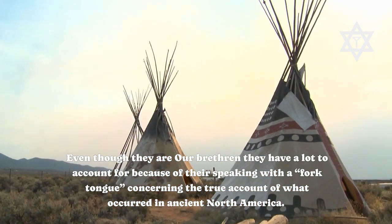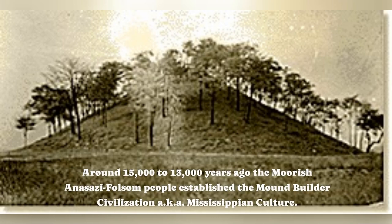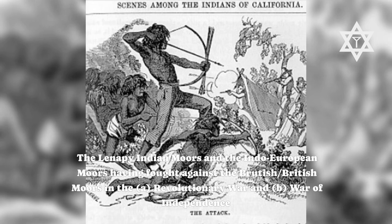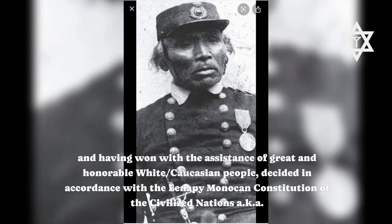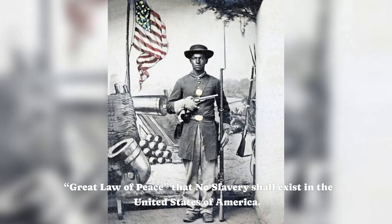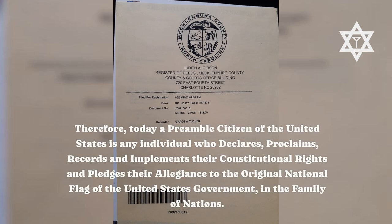The Moorish Anasazi Folsom people established the mound builder civilization, aka Mississippian culture. The Lenipi Indian Moors and the Indo-European Moors, having fought against the British Moors in the revolutionary war and war of independence — both called the American Revolution — and having won with the assistance of great and honorable white Caucasian people, decided in accordance with the Lenipi Monacan constitution of the civilized nations, aka Great Law of Peace, that slavery shall not exist in the United States of America. Therefore today a preamble citizen of the United States is any individual who declares, proclaims, records, and implements their constitutional rights and pledges their allegiance to the original national flag of the United States government in the family of nations.